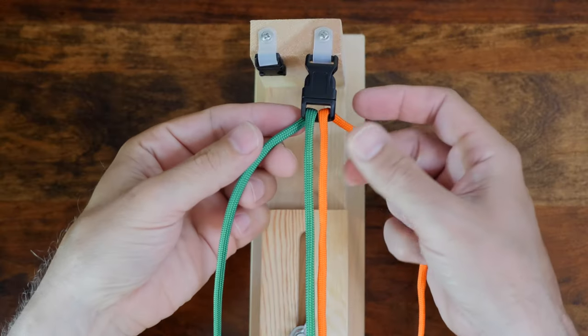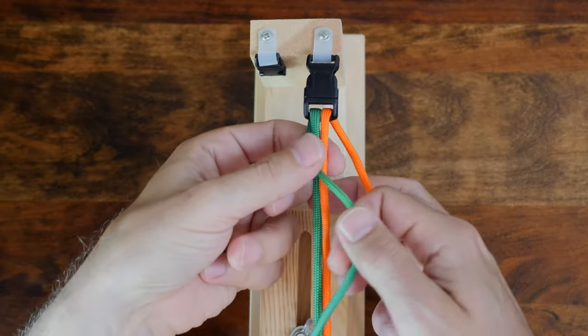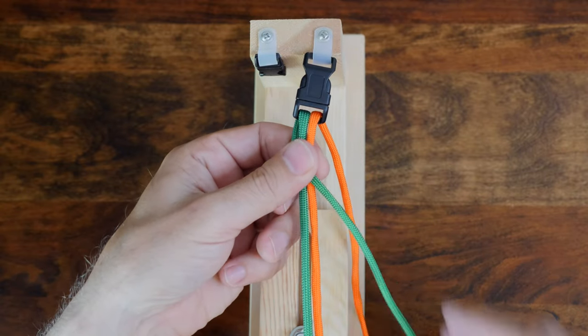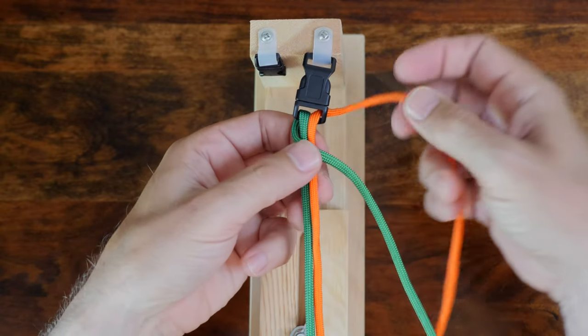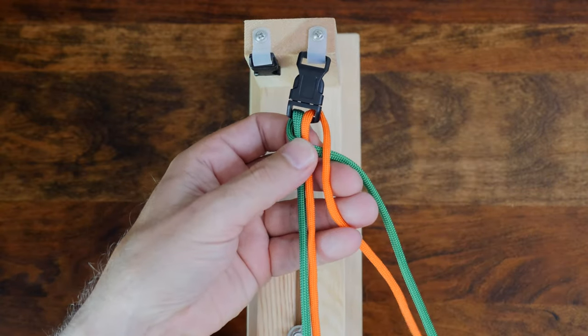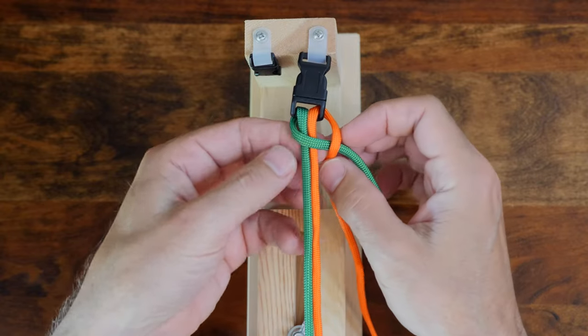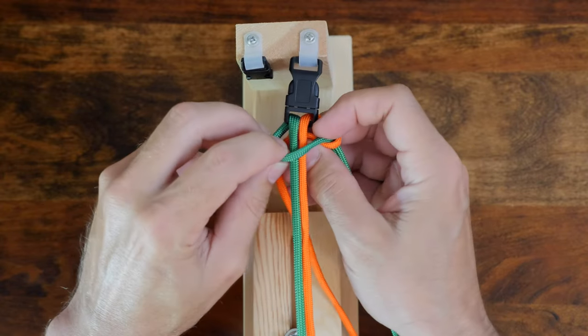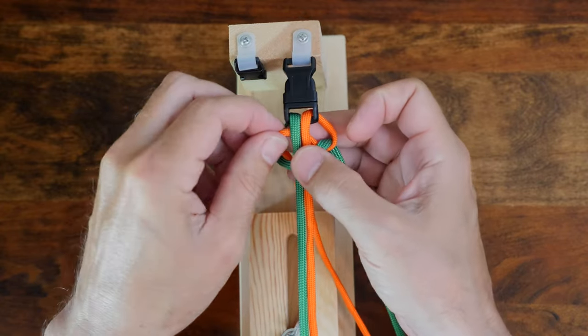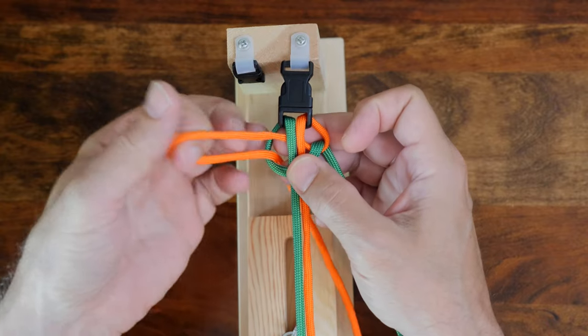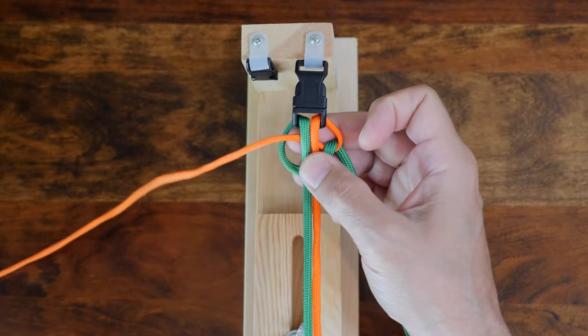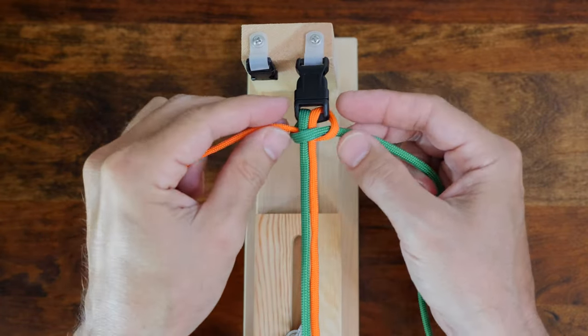I'm going to start on the left side and cross the green cord over both core strands. Then I pass the orange cord over the green, then under both core strands, and then up through the loop on the left side. And then pull on both cords to cinch up the knot.